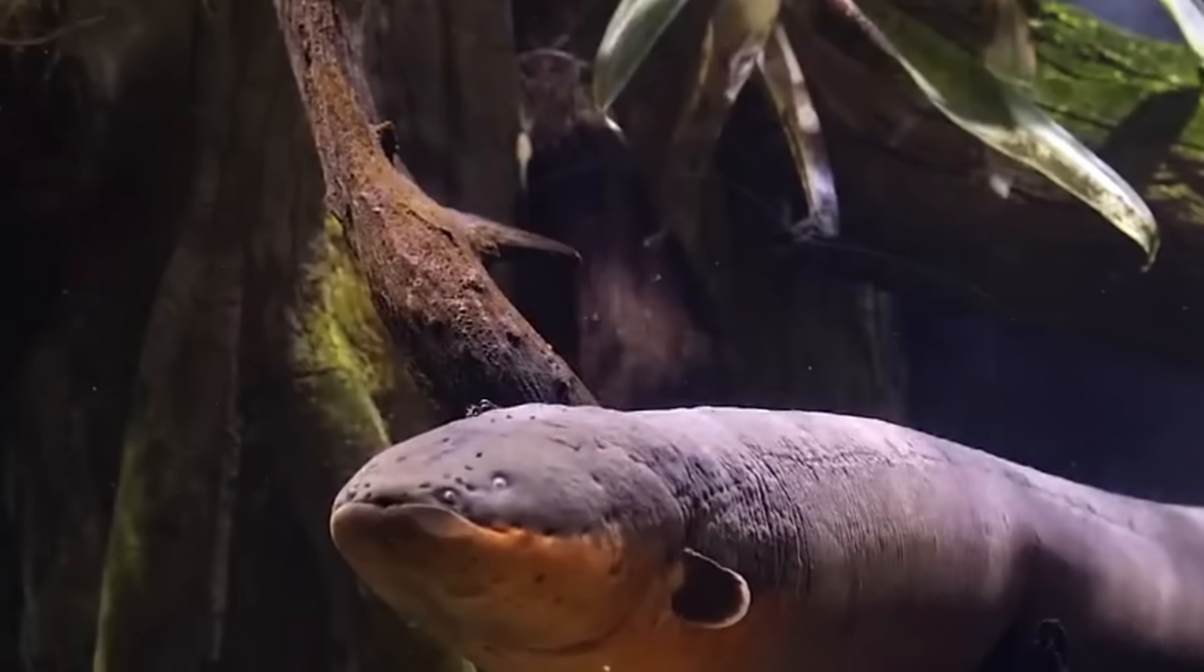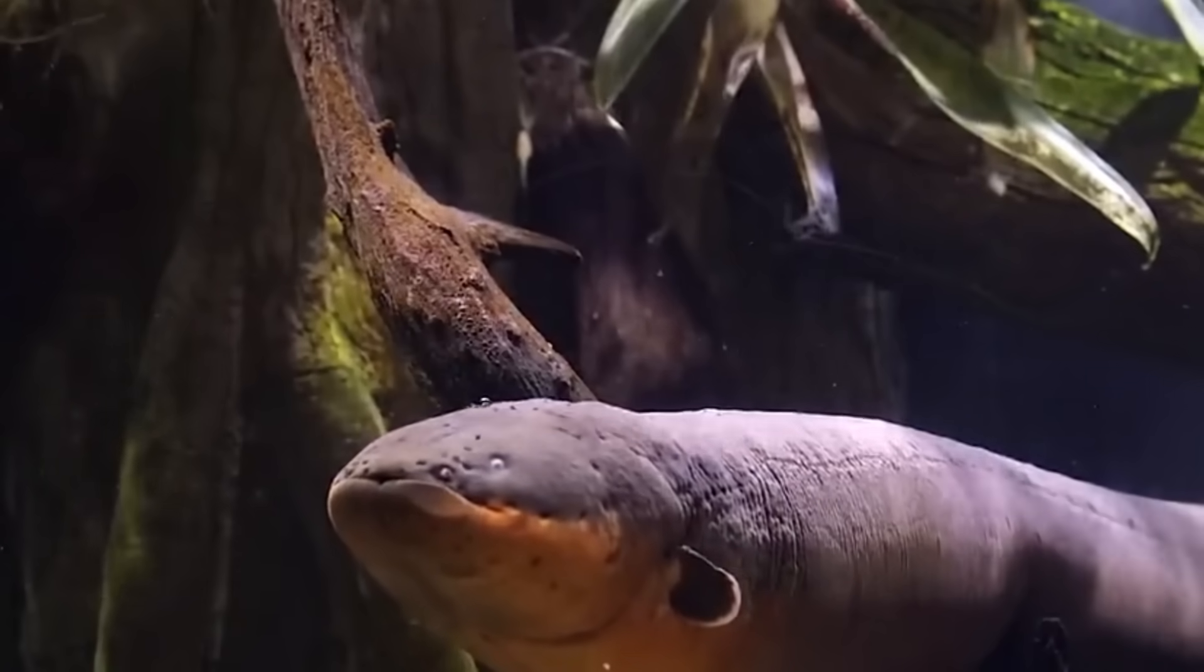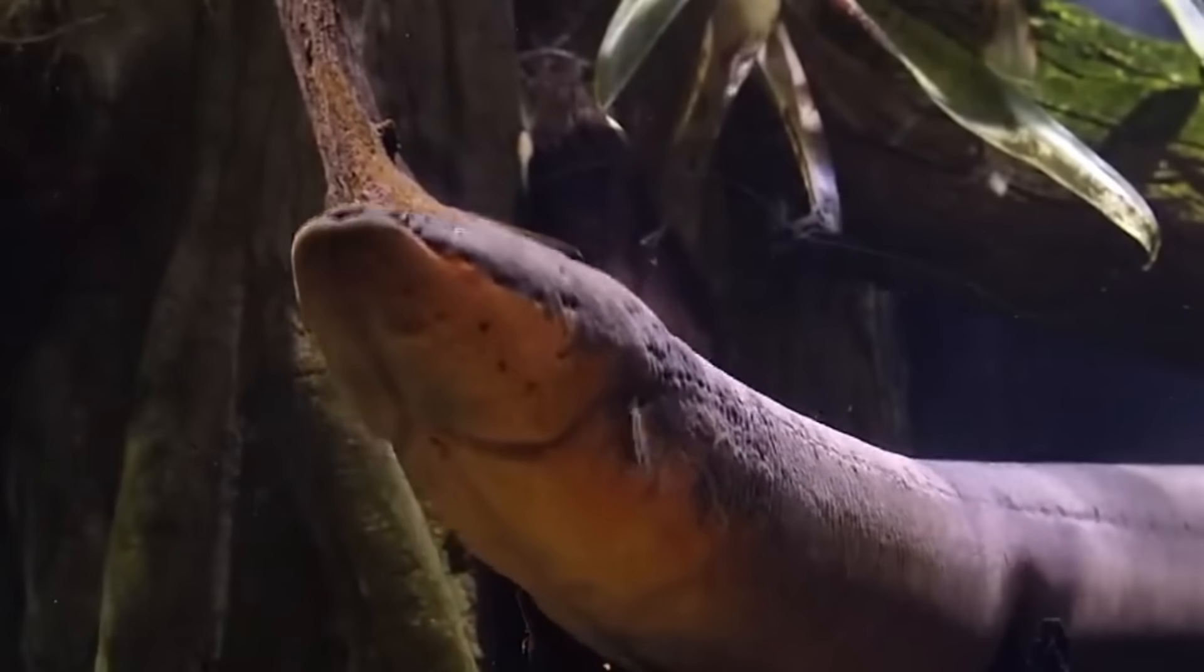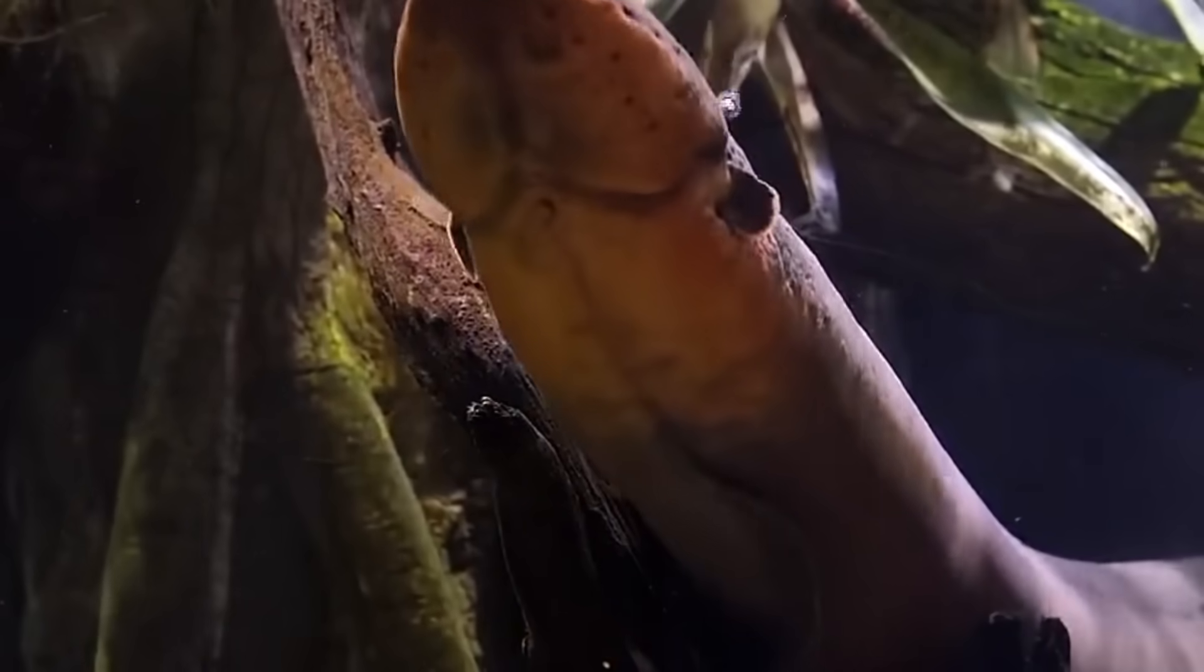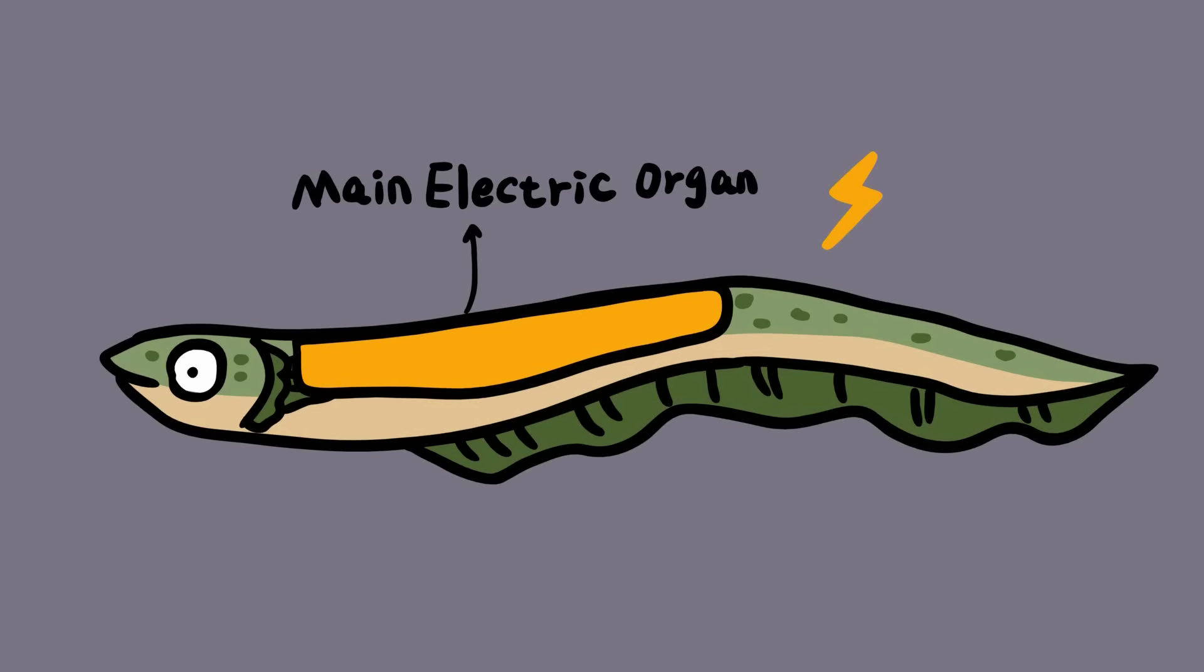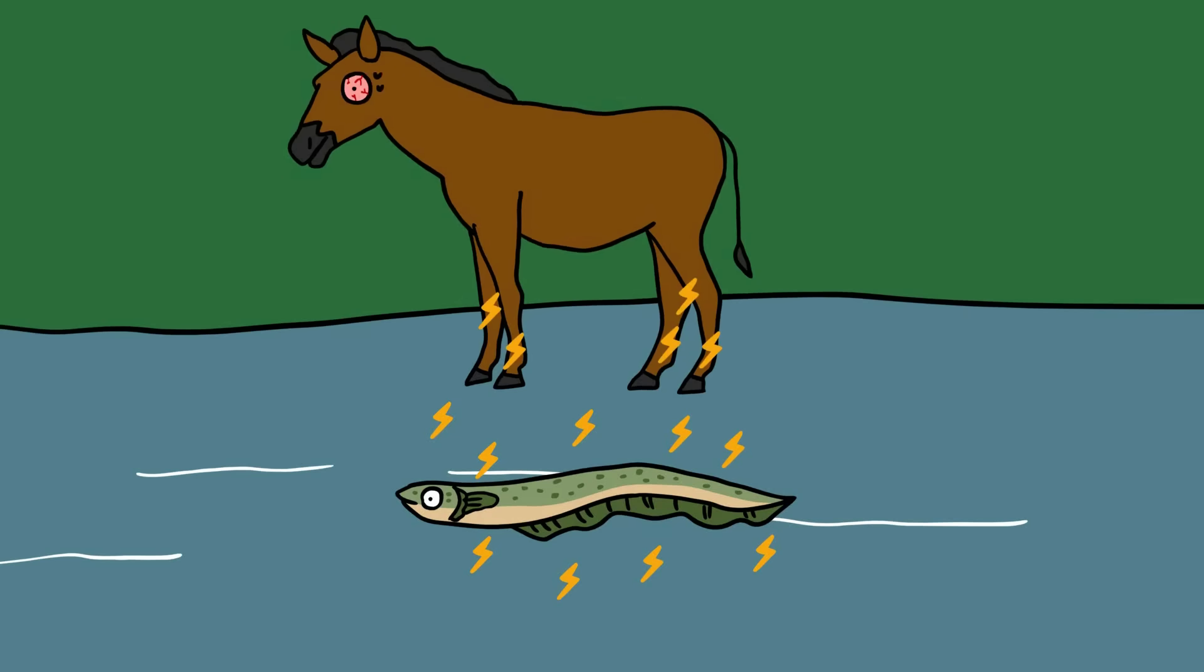Electric eels. Electric eels are actually more closely related to catfish than eels, but you probably wouldn't want to get close enough to one to find out. They can grow up to 2.5 meters and can produce jolts of electricity from specialized cells called electrocytes arranged down their flanks. These charges can reach up to 600 volts, five times the charge of an average American plug socket, and enough to knock a horse off its feet.